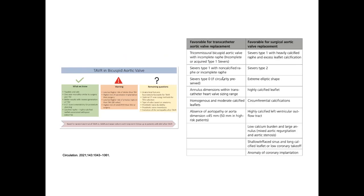Favorable conditions for transcatheter TAVR in bicuspid: tricommissural bicuspid with incomplete raphae; Sievers type 1 with non-calcified or incomplete raphae; Sievers type 0 if circularity is preserved; annulus dimension within the THV sizing range; homogeneous and moderately calcified leaflets; and absence of aortopathy or significant aortic dimensions. Unfavorable conditions requiring referral for surgery: Sievers type 1 with heavily calcified raphae; Sievers type 2; extreme elliptic shape; highly calcified leaflets; circumferential calcification; highly calcified LVOT; low calcium burden with large annulus; mixed aortic regurgitation and stenosis; shallow sinus with long calcified leaflet or low coronary takeoff; and anomaly of coronary implantation.